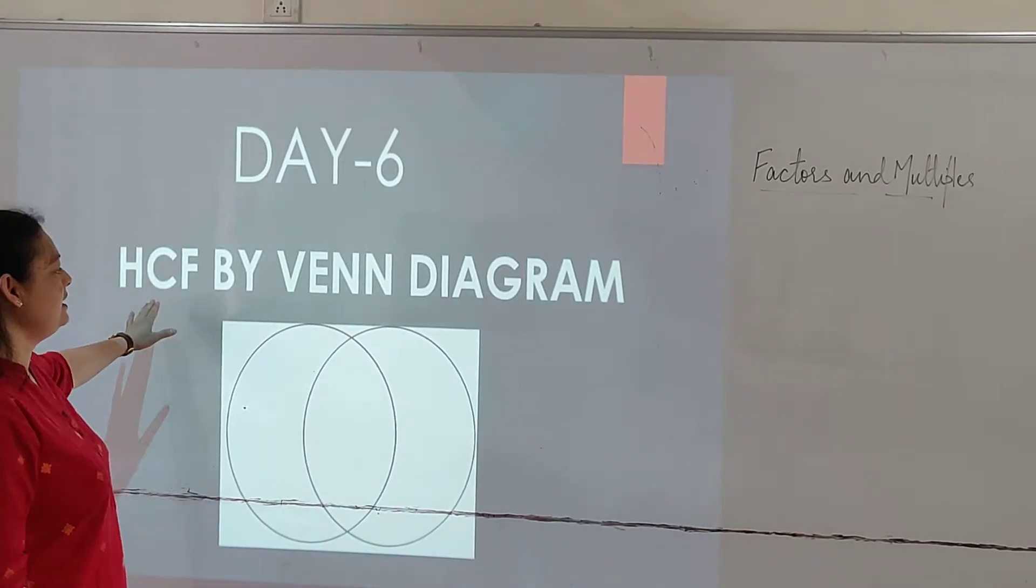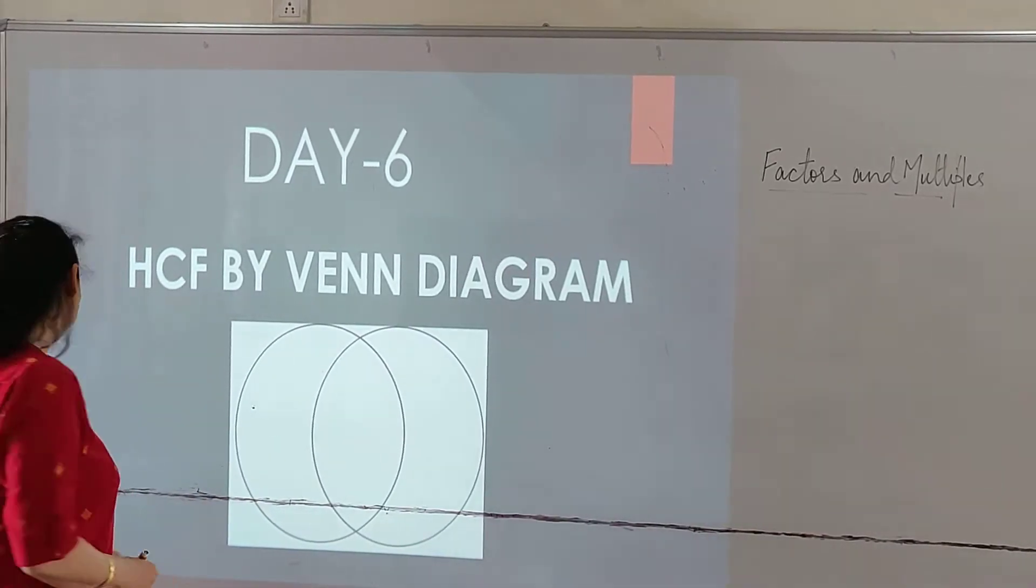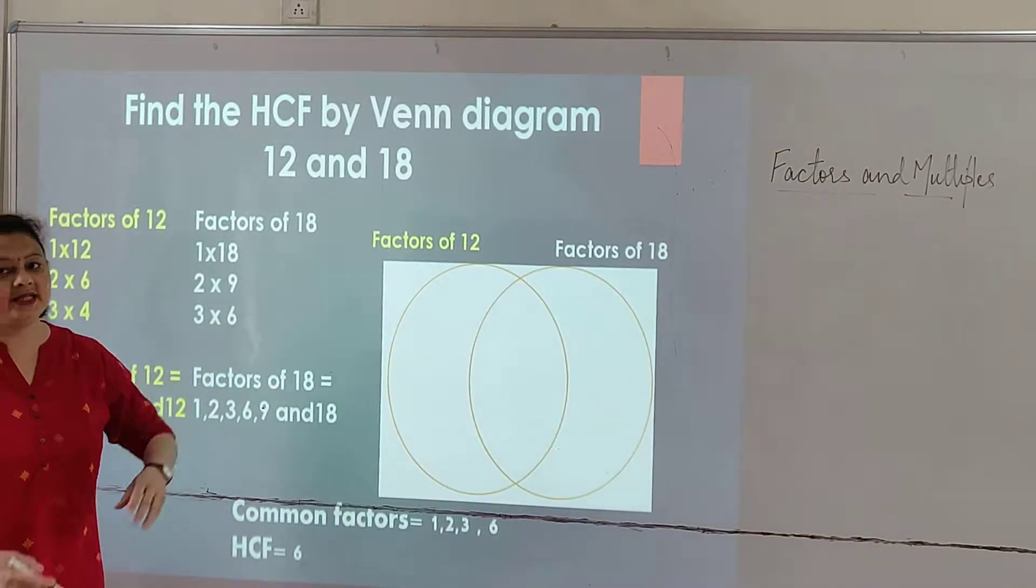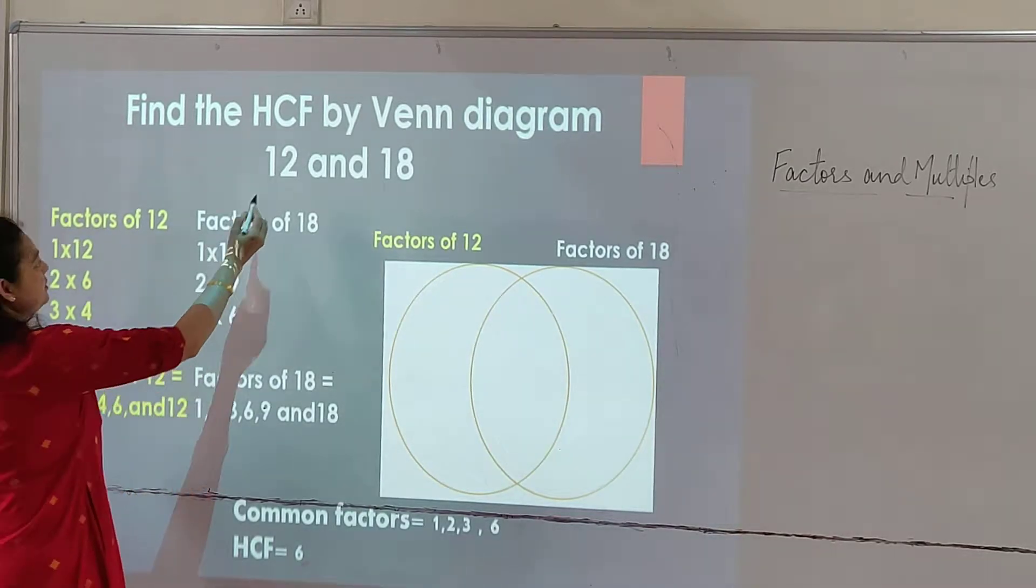Day 6. Today we will find HCF by Venn diagram. HCF of 12 and 18. For HCF we need to know the factors.